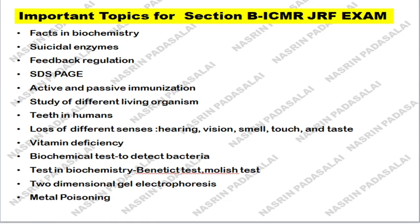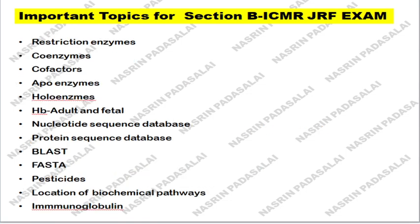Know about vitamin deficiency and biochemical tests used for detecting microbiological tests — you can refer to your microbiology lab record notebook. There are various tests like the catalase test, oxidase test, Voges-Proskauer test, and so on. Also know biochemical tests in biochemistry — tests used for detection of fat, carbohydrates, and protein, like Molisch's test and Benedict's test. Next, know about metal poisoning. Next, restriction enzymes and types of restriction enzymes, coenzymes, cofactors, apoenzymes, and holoenzymes. Next, the structure of hemoglobin and the structure of fetal hemoglobin.